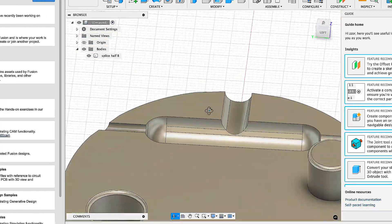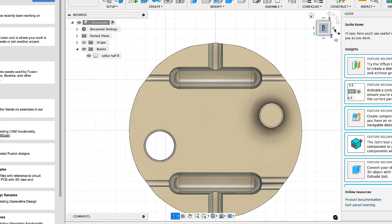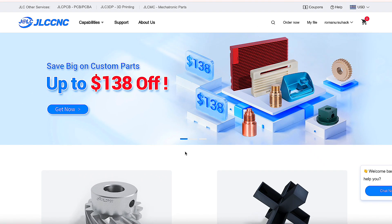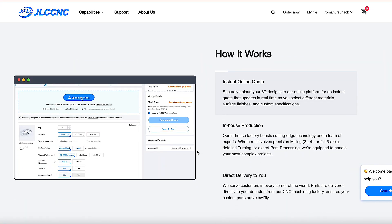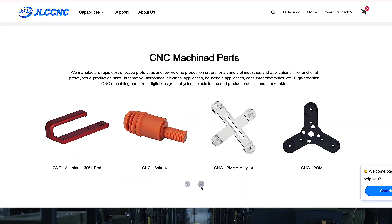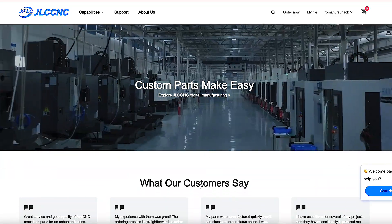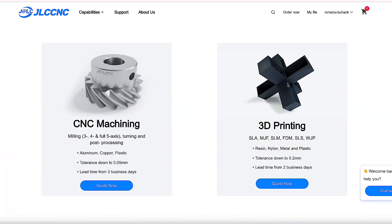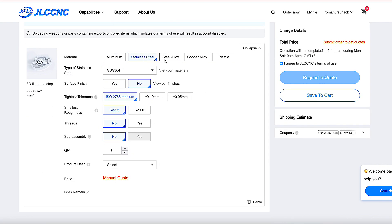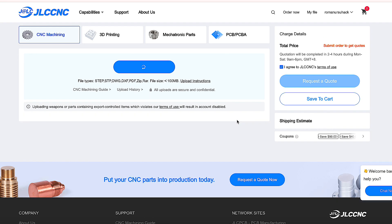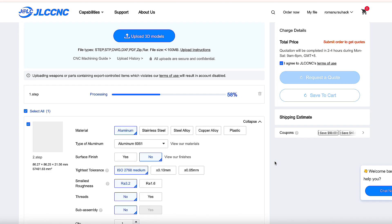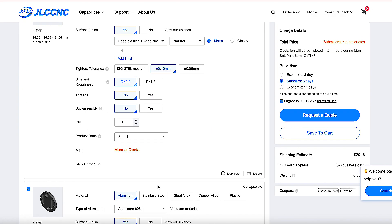After I modeled the mold in two parts and prepared the files for production, I uploaded them to JLCCNC, my trusted CNC machining partner. JLCCNC provides fast, precise, and affordable custom parts for engineers, makers, and businesses. This gave me the opportunity to bring my idea to life in an aluminum mold for testing wire insulation.